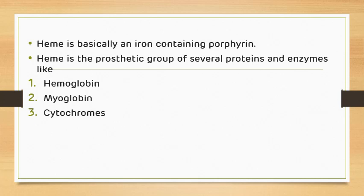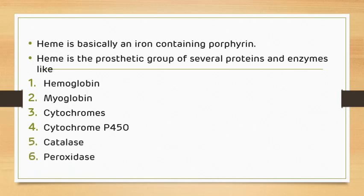Heme is also present in cytochrome P450, which is important for the detoxification of drugs; this cytochrome P450 is present in the liver. It is also present in catalase and peroxidase, which are enzymes important for free-radical scavenging. So these are the various proteins and enzymes where heme is present as a prosthetic group.